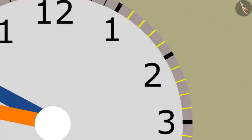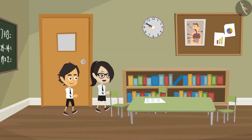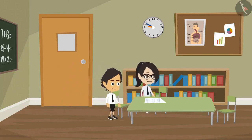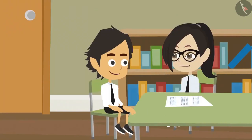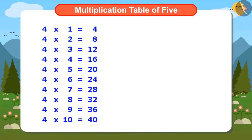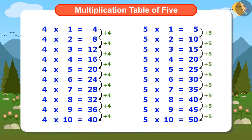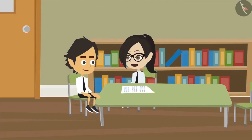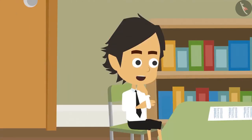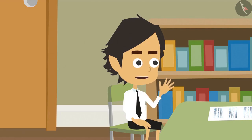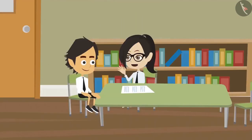Now you can also use the multiplication table of 5 to read the minutes — you do not have to count them one by one. Yes, I will do this now. But how did you write the multiplication table of 5? The multiplication table of 4 is written by adding 4 repeatedly. In the same way, the multiplication table of 5 is written by adding 5 repeatedly. But I used the multiplication tables of 2 and 3 to write the table of 5.